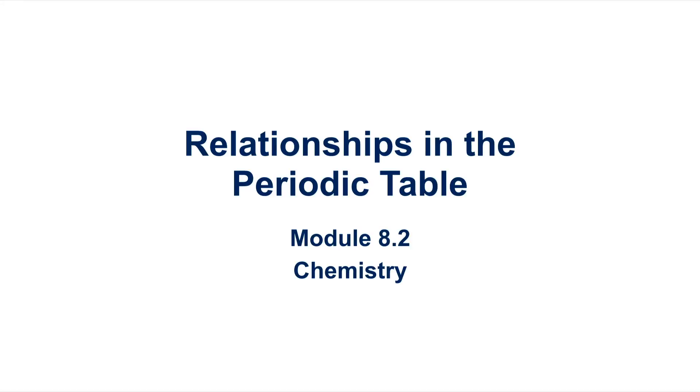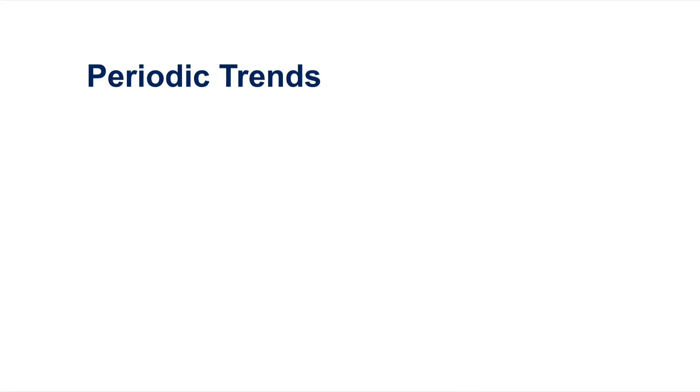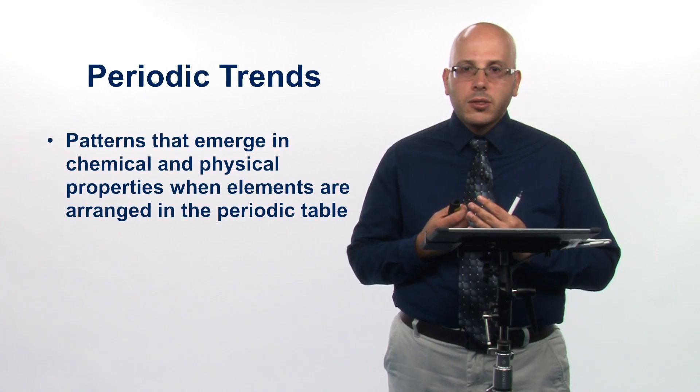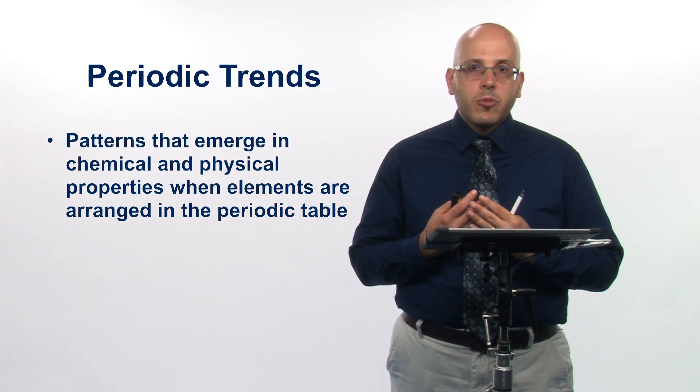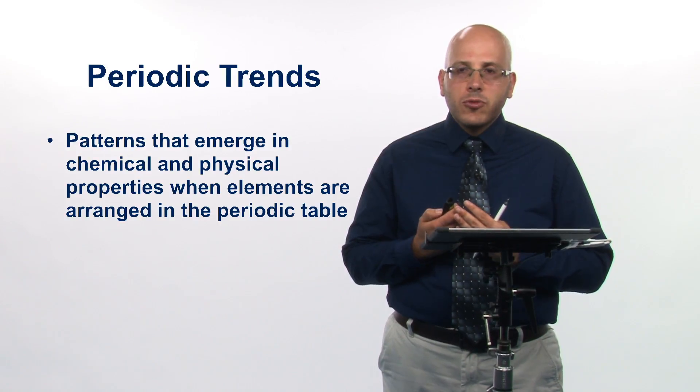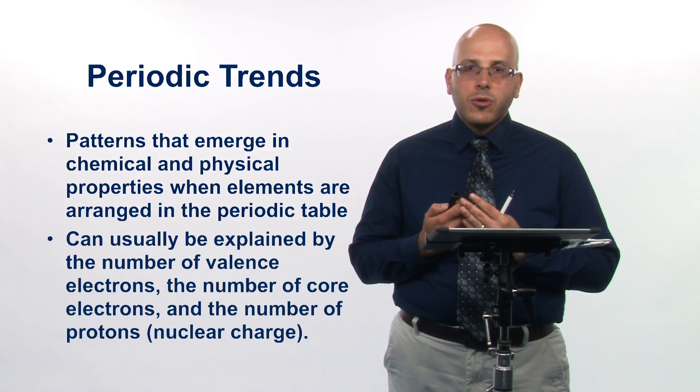Let's talk about some relationships in the periodic table, which falls into module 8.2. Some of this we've seen a little bit earlier. This falls into the category of periodic trends — patterns that emerge in the periodic table when looking at different chemical and physical properties. Usually we can describe these trends in terms of a relatively small number of variables: the number of valence electrons, number of core electrons, and number of protons, also known as the effective nuclear charge.